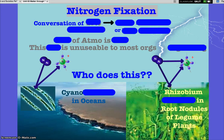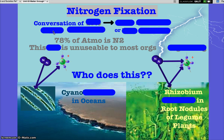So, where is nitrogen on Earth, mainly? How much of the atmosphere? 78%. So 78% of our atmosphere is nitrogen gas. At this level of environmental science, we want to call things as they are. Nitrogen is an element. When nitrogen is in the atmosphere, 78% of it is nitrogen gas. Believe it or not, this gas is unusable to most organisms.